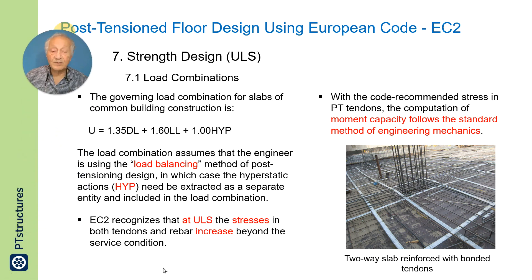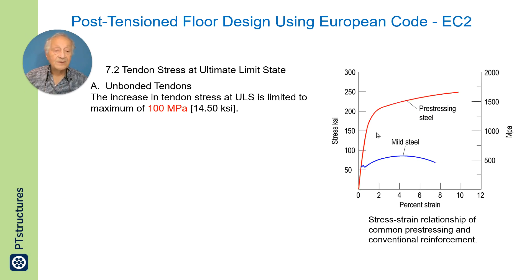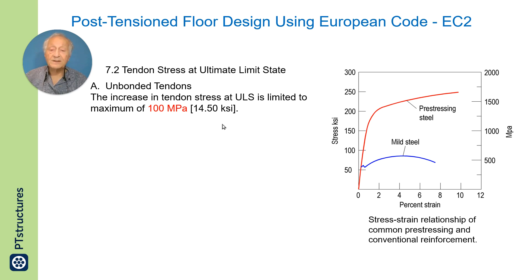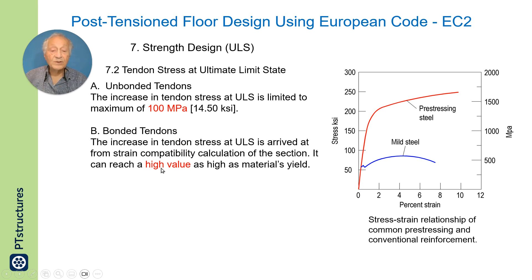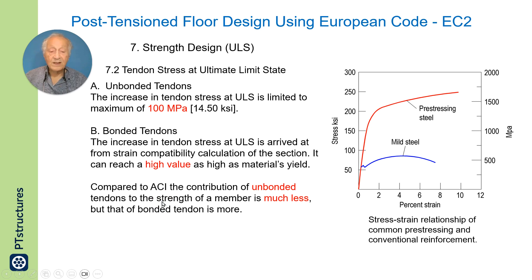EC2 recognizes that at the strength limit state, the stresses in the post-tensioning will be increased above service levels. For bonded tendons, EC2 allows the stress to increase up to yield. For unbonded tendons, only 100 MPa increase in tendon stress is allowed at the ultimate limit state. This represents a big difference between bonded and unbonded tendons compared to ACI.